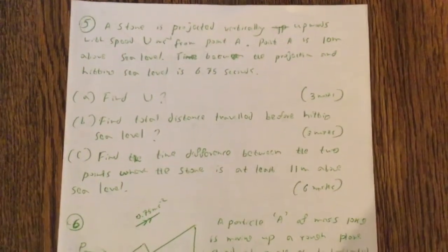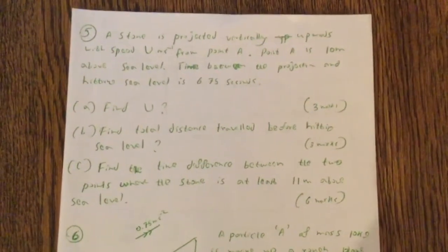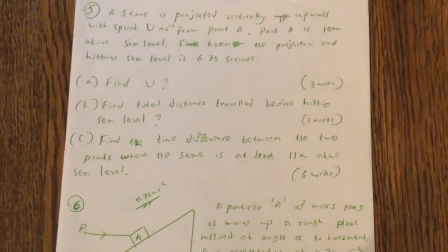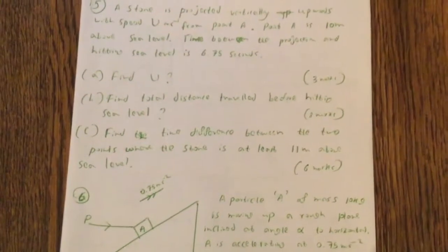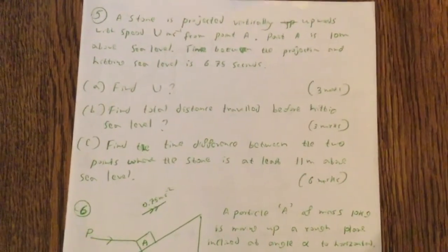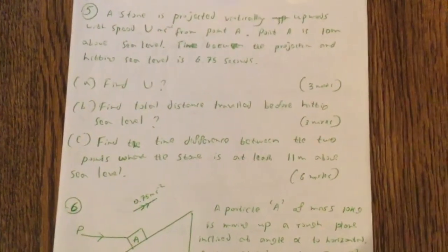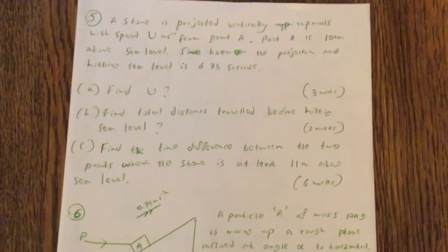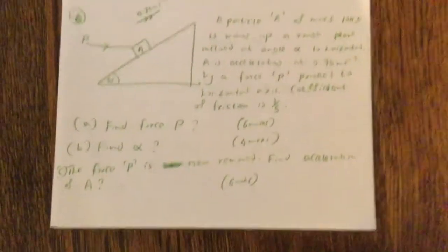Question A, find u. B, find total distance travelled before hitting sea level. C, find the time difference between the two points where the stone is at least 11 meters above sea level. Question 6.